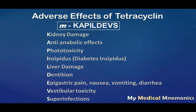KAPIL DEVS is the mnemonic to remember the adverse effects of tetracycline. K is for kidney damage, A for anti-anabolic effect, P for phototoxicity, I for insipidus (diabetes insipidus), L for liver damage, D for dentition problems, E for epigastric pain — which includes nausea, vomiting, and diarrhea as irritative effects of tetracycline.